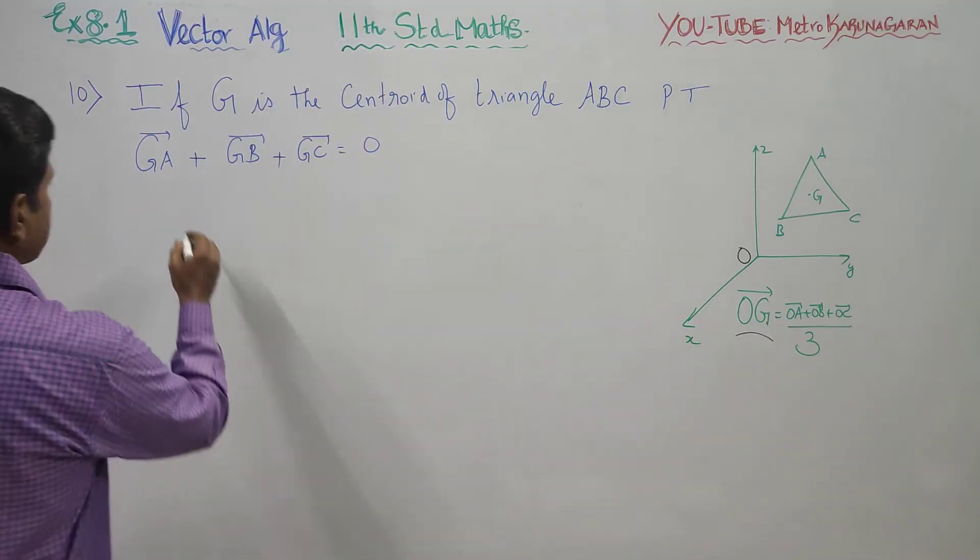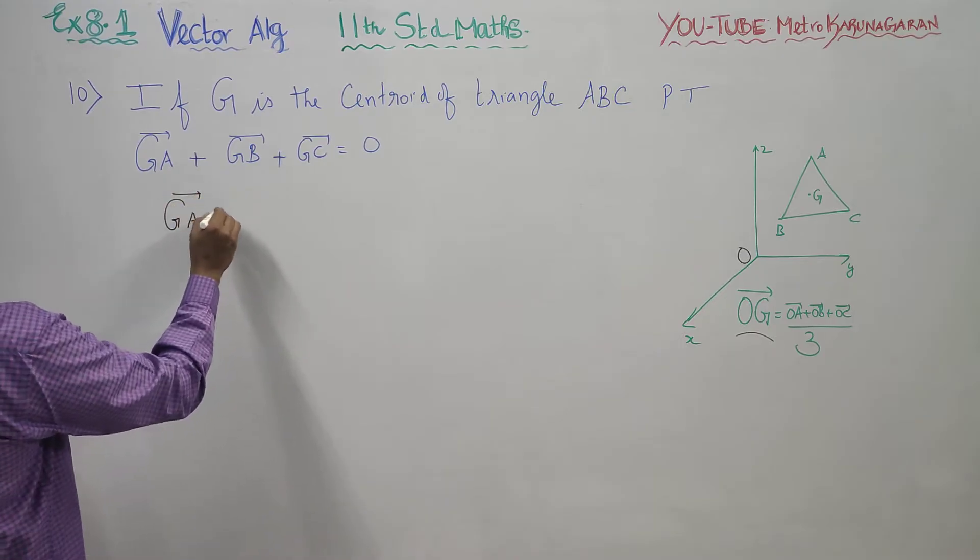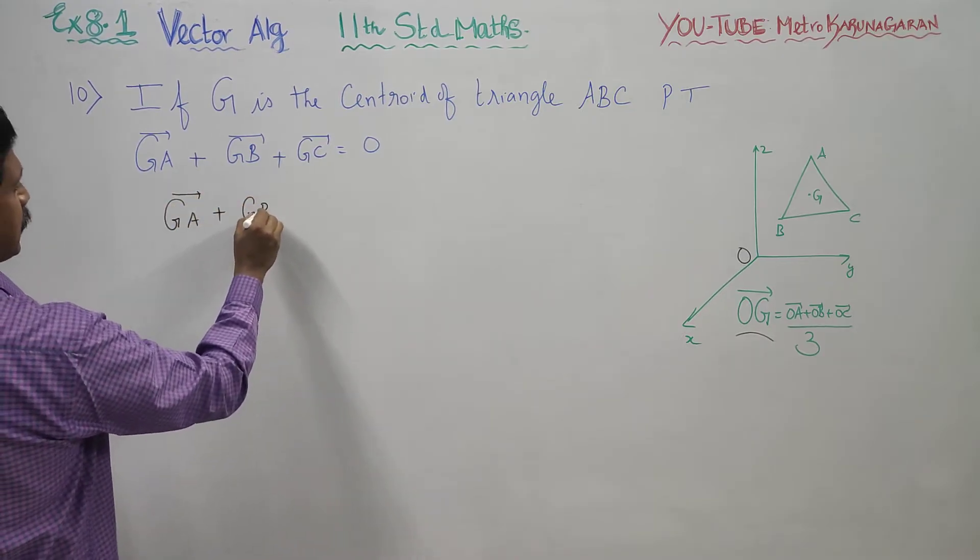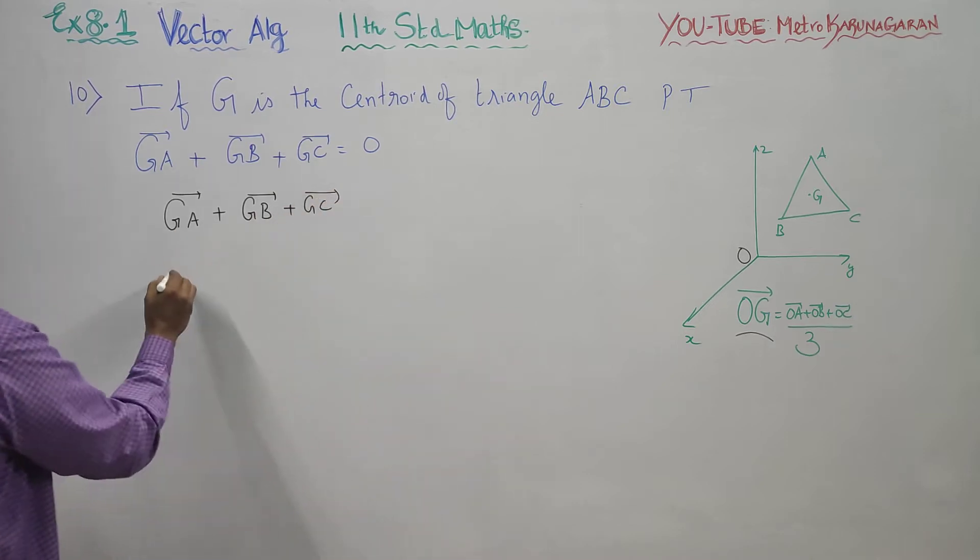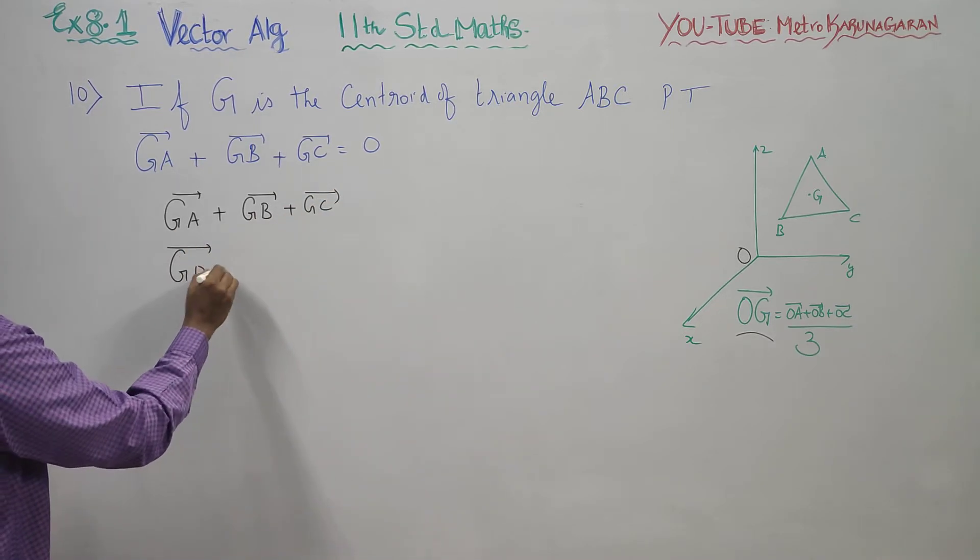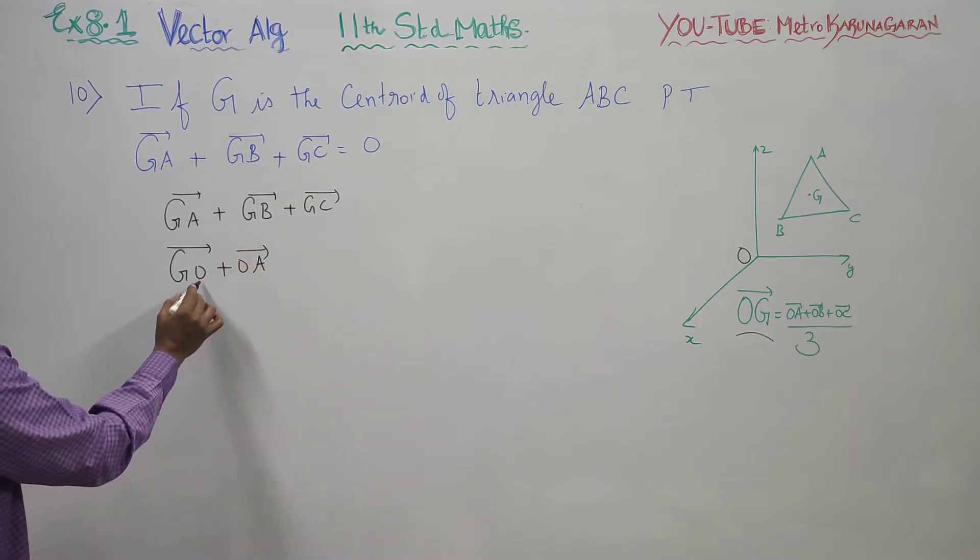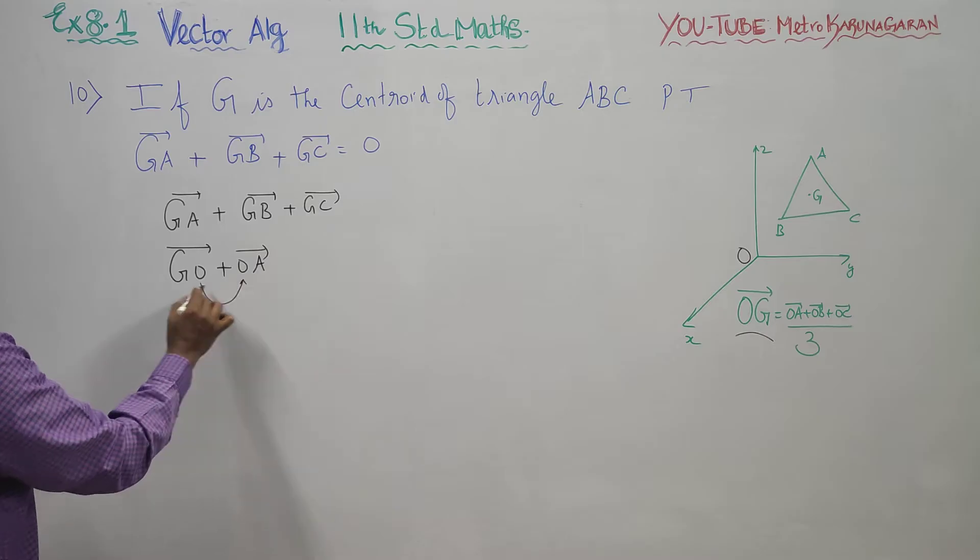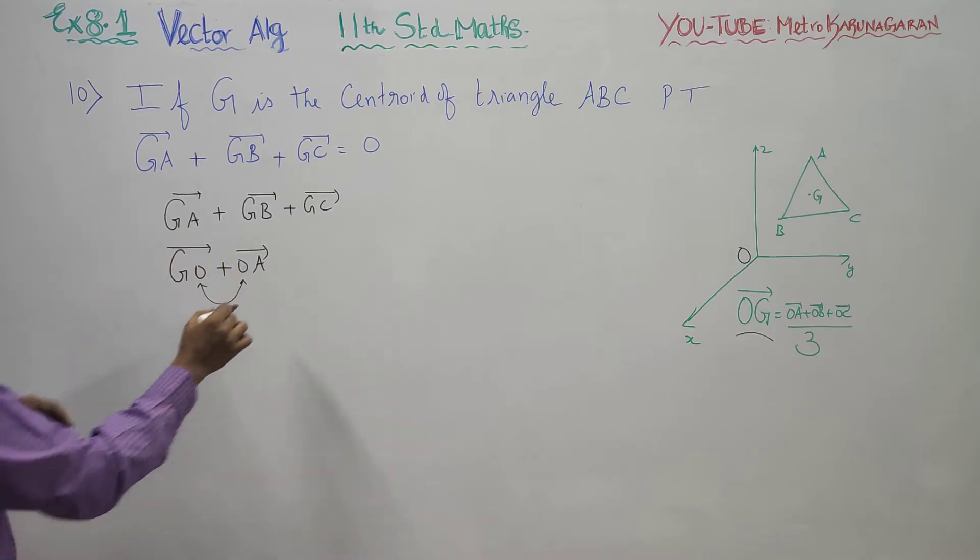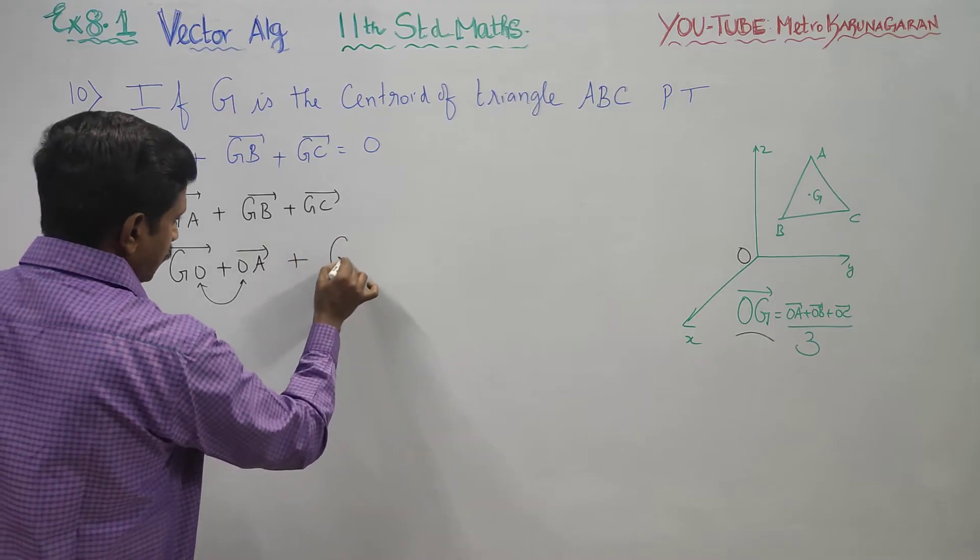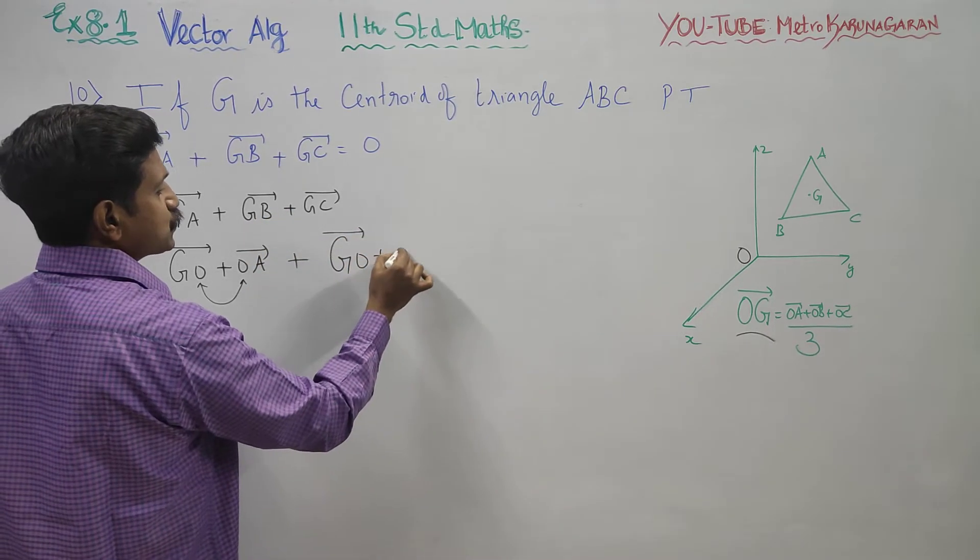We need to prove GA vector plus GB vector plus GC vector equals 0. I will start with the left-hand side. GA vector can be written as GO plus OA. Similarly, using the same reference point, GB vector equals GO plus OB.